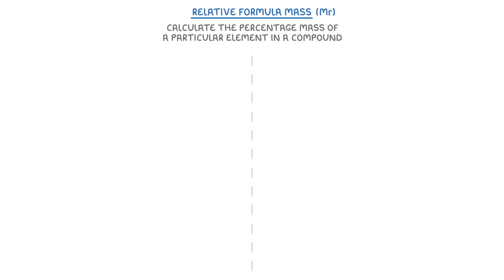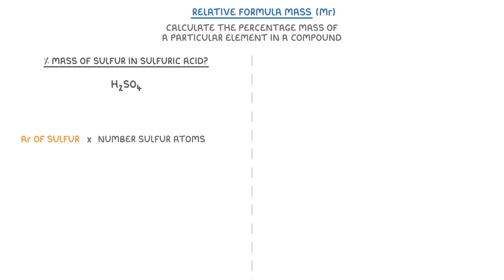You could also be asked to calculate the percentage mass of a particular element in a compound. For example, we could find the percentage mass of sulfur in sulfuric acid. For this, we do the Ar of the element we're looking for, times the number of atoms of that element, divided by the Mr of the compound. And then we multiply it all by 100 to turn it into a percentage.